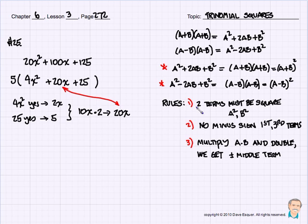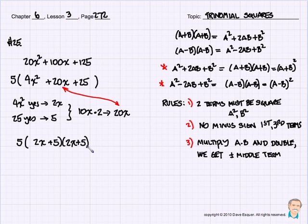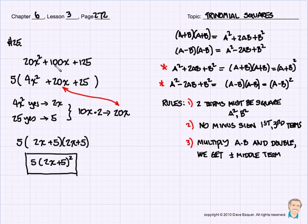So from all this information, we know rules 1, 2, and 3 all work. The factors turn out to be 5 times the quantity 2x plus 5 times 2x plus 5, or 5 times the quantity of 2x plus 5 squared. So the factors for 20x squared plus 100x plus 125 are 5 times the quantity of 2x plus 5 squared.